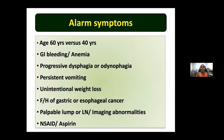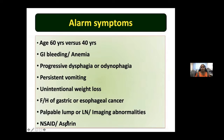Alarm symptoms include: age more than 60 years (more than 40 years in Korea, Japan, and China); GI bleeding; anemia; progressive dysphagia or odynophagia; persistent vomiting; unintentional weight loss; family history of gastric or esophageal cancer; presence of a palpable lump, lymph node, or imaging abnormality; and history of NSAID or aspirin use. Presence of even one alarm symptom increases the risk of finding an organic lesion.